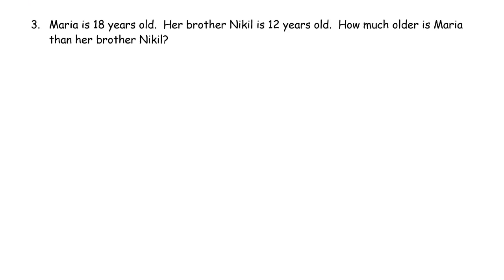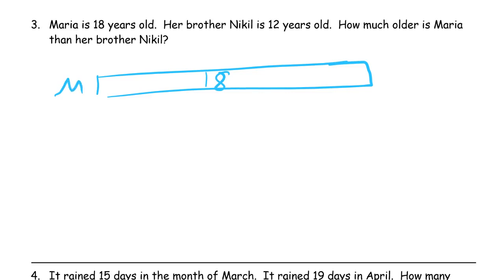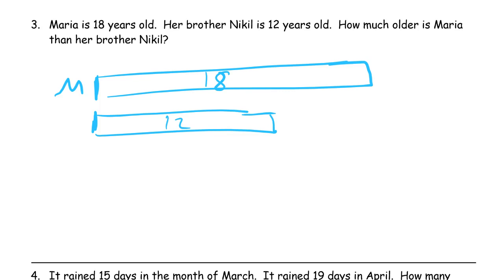Maria is 18 years old. Her brother Nikhil is 12 years old. How much older is Maria than her brother Nikhil? Maria is 18, so we put that right on a piece of tape — 18, and that's Maria. Nikhil is 12. We start at the same endpoint; 12 is going to be shorter than 18 because 12 is less than 18. We want to know how much older Maria is, so we're trying to find out exactly how much is the difference between them — that's O for older, how much older.